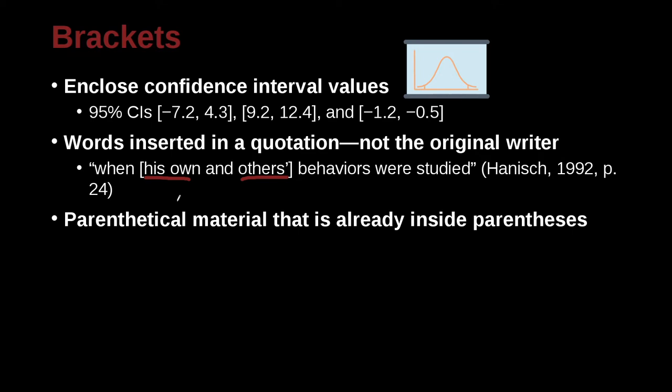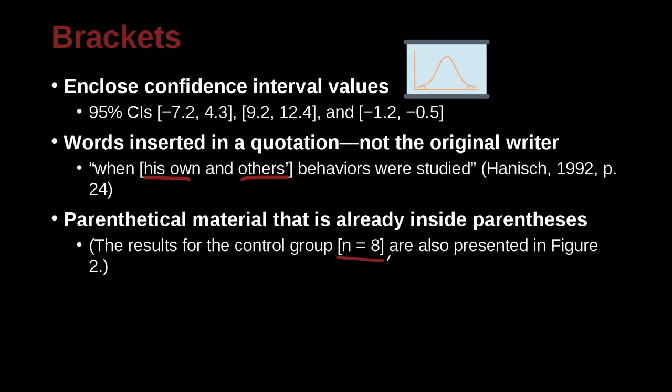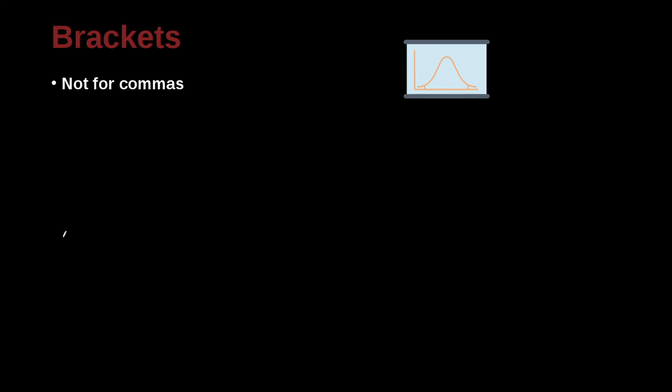Parenthetical material. Parenthetical material that is already inside of a parentheses. So for example, here I want to add something that would usually use a parentheses, but I can't use a parentheses. Why? Because I'm already inside of a parentheses. So you use the brackets as we've already mentioned.